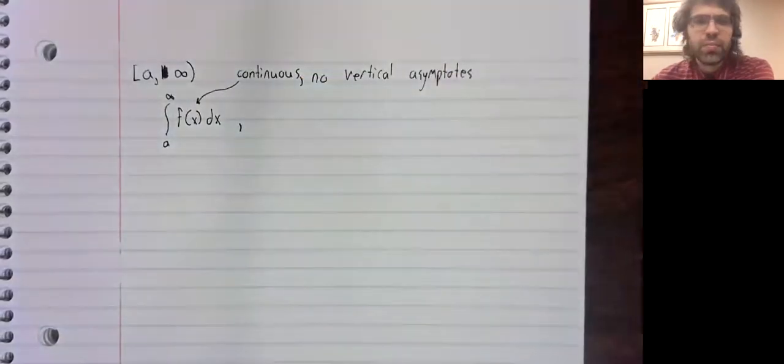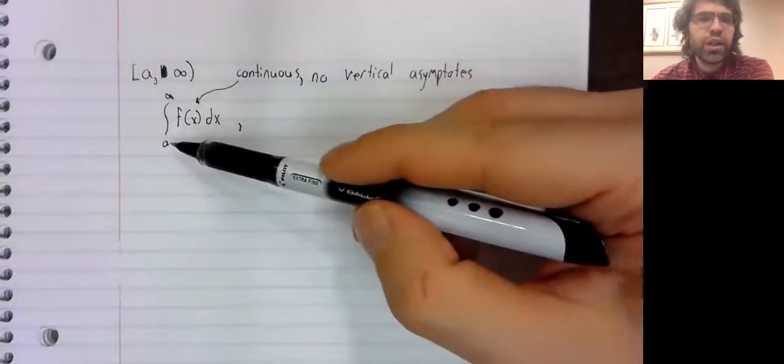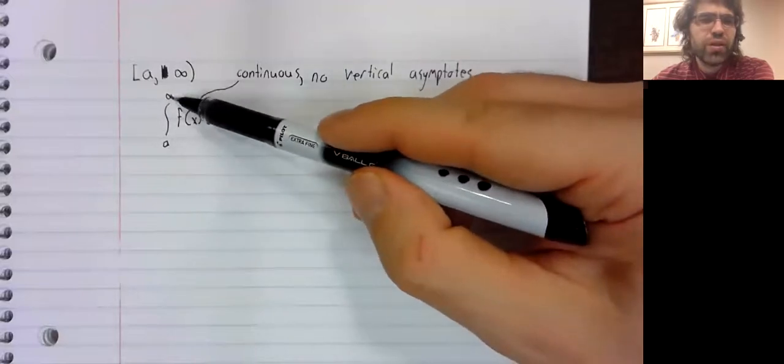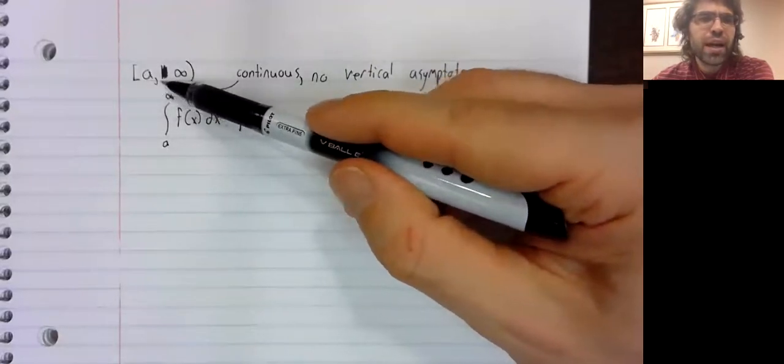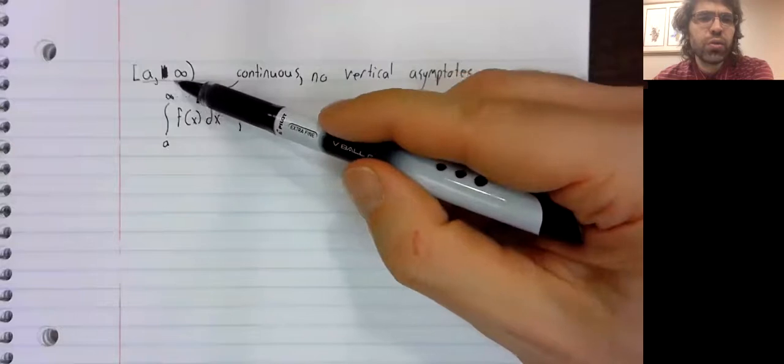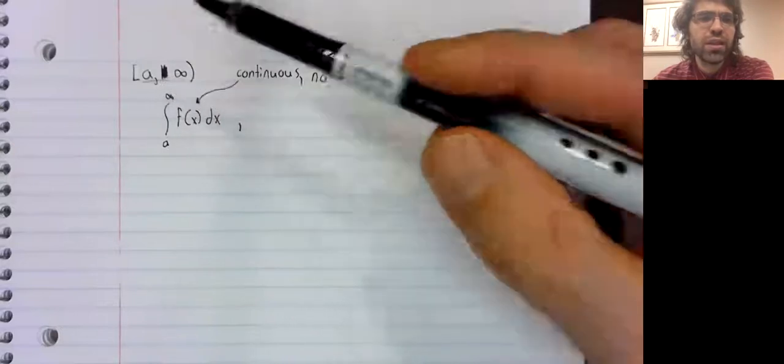And here, we're integrating from a to infinity. We've got a half infinite interval that looks like this.